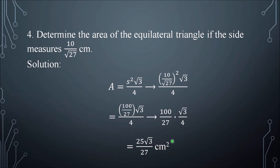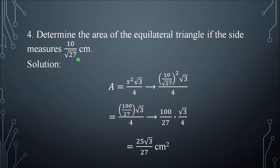Using the cancellation method: 100 divided by 4 gives 25, and 4 is canceled. Then 25 × √3 = 25√3 in the numerator, and 27 remains in the denominator. So the final answer is 25√3 / 27 cm². That is the area of the equilateral triangle if the side is 10/√27 cm.